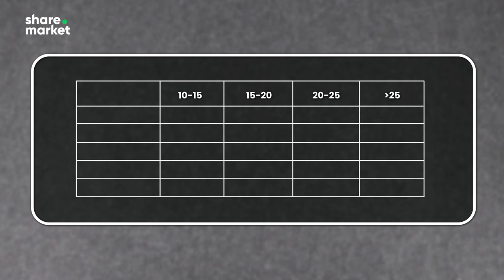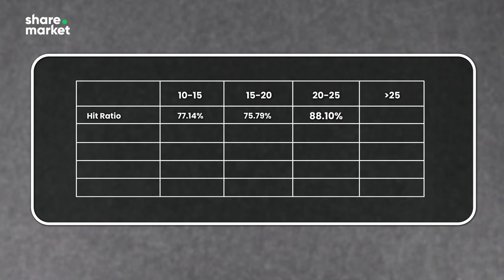What we found is the hit ratio varies from 70-75% and goes up to 80-88%. Hit ratio means out of 100 trades, how many are positive. Between 10 to 15 and 15 to 20 the hit ratio is roughly 75-77%. As we go into the range of 20 to 25, the hit ratio increases to 88%. This validates that if you are shorting strangle in a high vol environment, the probability of having more positive trades is higher.